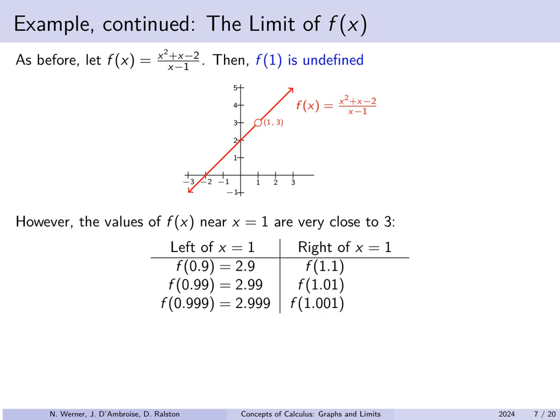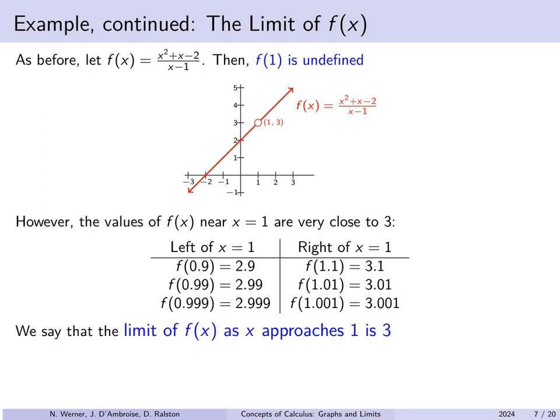What about values just to the right of 1, like 1.1, 1.01, 1.001? Since these are not exactly equal to 1, they're in the domain, and f of x is just x plus 2. So we get out 3.1, 3.01, 3.001 respectively. What we're observing is that as x gets very close to 1 from either side, the value of f of x is approaching 3. We say this by saying: the limit of f of x as x approaches 1 is 3.